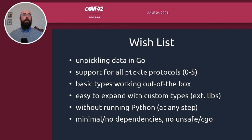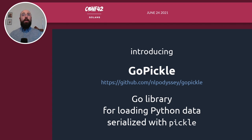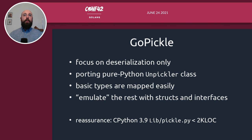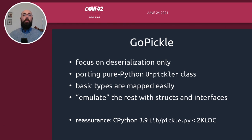I tried to look around for existing projects but couldn't find exactly what I was looking for, so I decided to do that by myself. And here I introduce you to the Go Pickle library — a library for loading Python data serialized with the Pickle module. This library is focused on deserialization only, at least for now. It's actually a port of the Python Unpickler class that you can find in the CPython reference implementation source code. Mapping the basic data types from Python to Go was a fairly easy process: boolean values, numbers — floating points and integers — strings, and even the Python None type was easily mapped to the Go nil value.